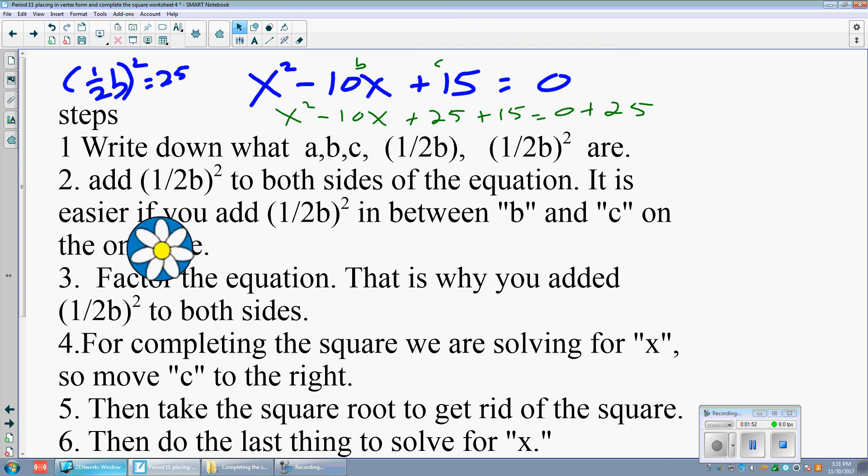So that's what we do, add it to both sides of the equation. It's easier if you add half of b in between b and c, right there in green.